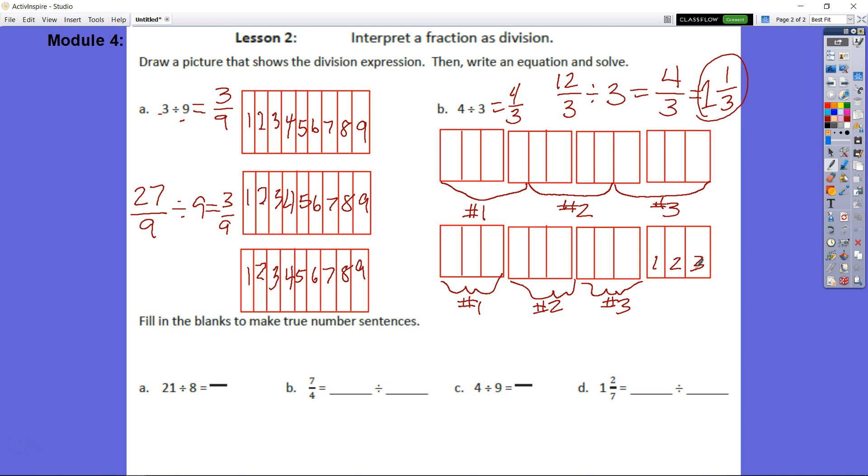Let's fill in the blanks to make true number sentences. We have 21 divided by 8. I know that's going to be 21 as numerator and 8 as denominator. The division sign equals your fraction bar. So that equals 21 eighths. Same thing here: 7 fourths, that's 7 divided by 4. Letter C is 4 divided by 9, which is 4 ninths.